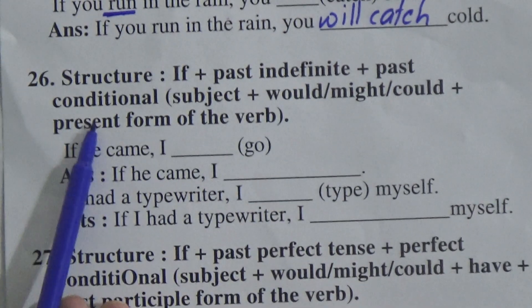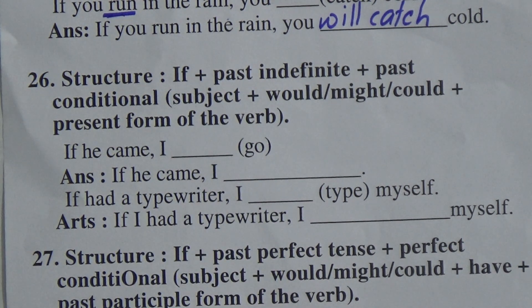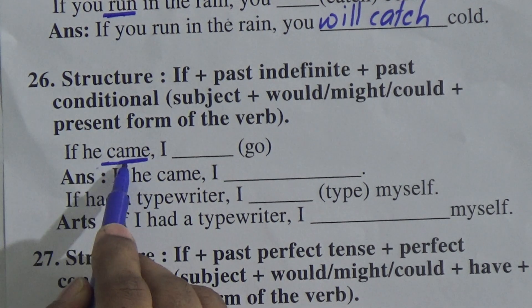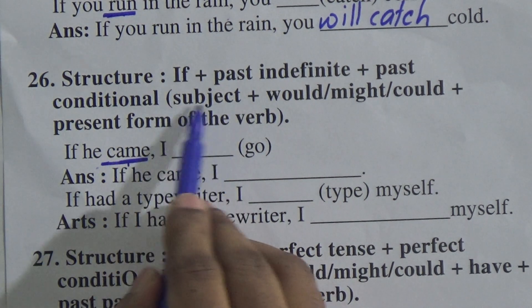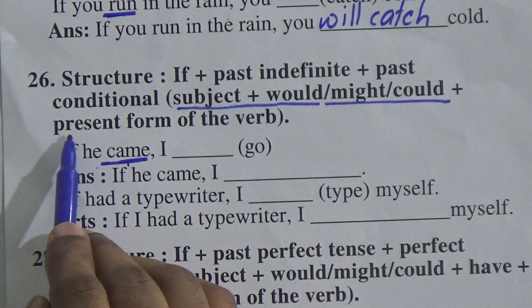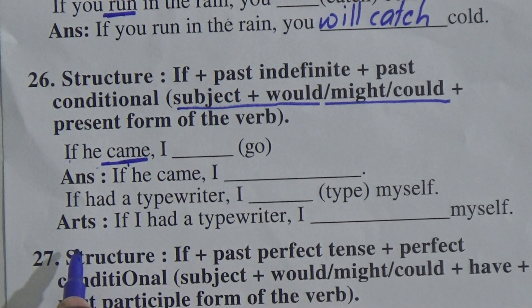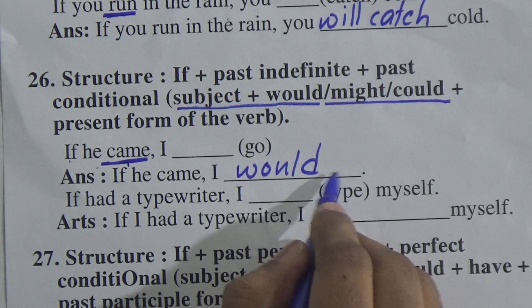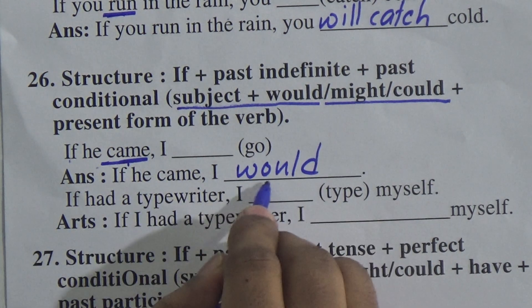Rule 26: structure is if + past indefinite + past conditional. Past conditional = subject + would/could/might + present form of the verb. After 'if', if past indefinite tense comes, we will do the other clause in past conditional. Past conditional means after the subject, would, could, or might will come — you can take any one of the three.